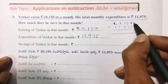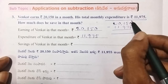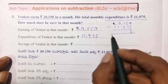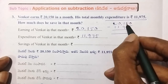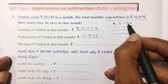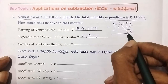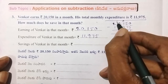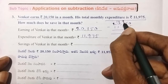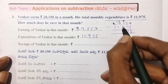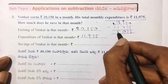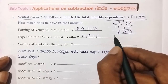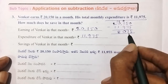Starting the calculation: $20,150 minus $11,975. At ones place: 0 minus 5 — borrow, so 10 minus 5 is 5. Tens: 4 minus 7 — borrow, 14 minus 7 is 7. Hundreds: this is 1 bar so it is 0. Thousands: 10 minus 9 is 0, leaving 8. This gives 875 rupees so far.